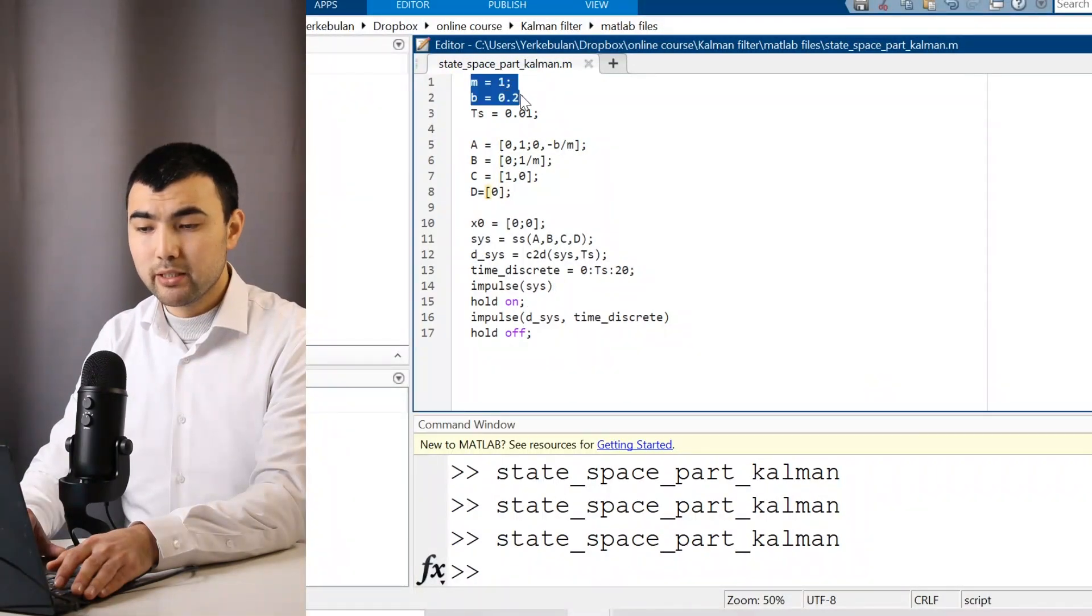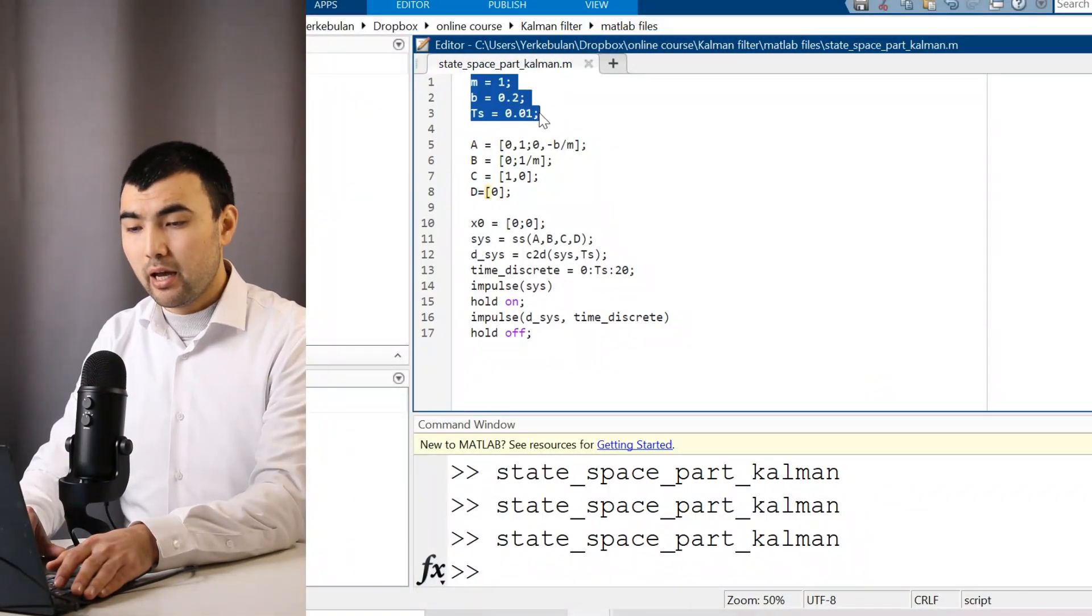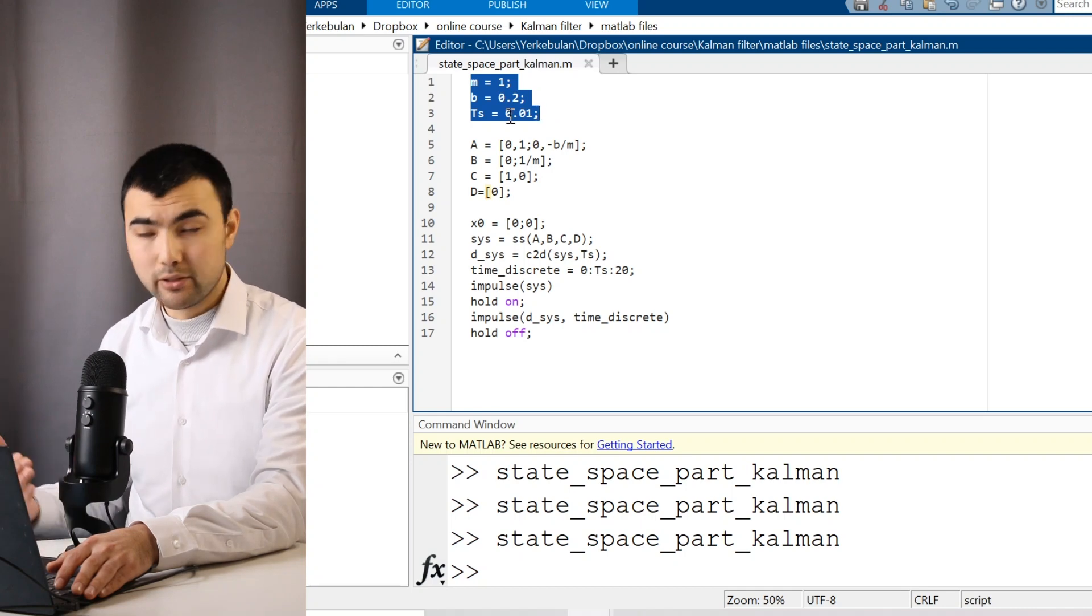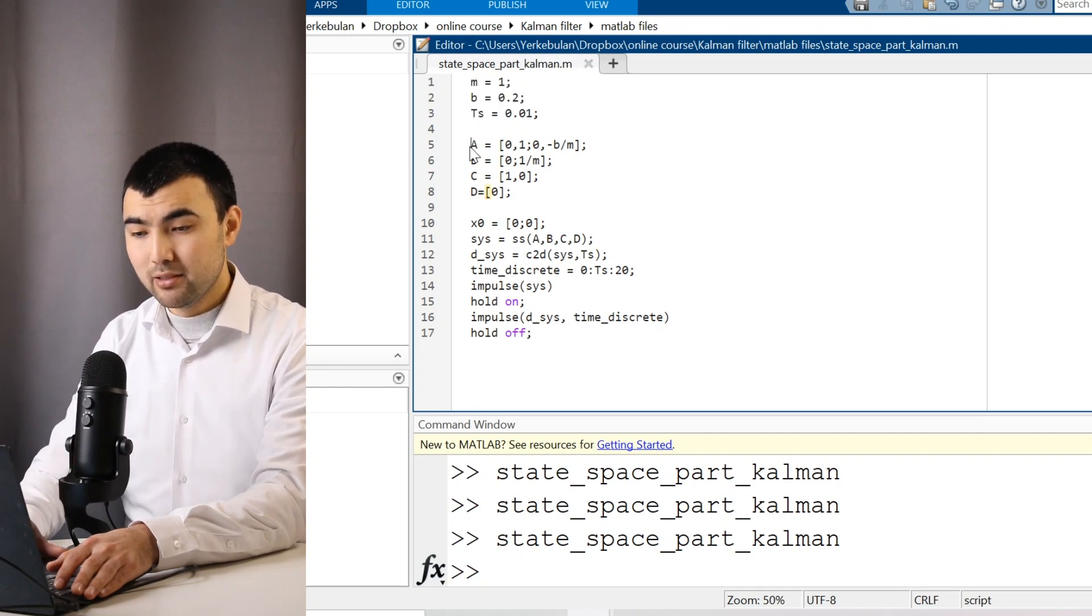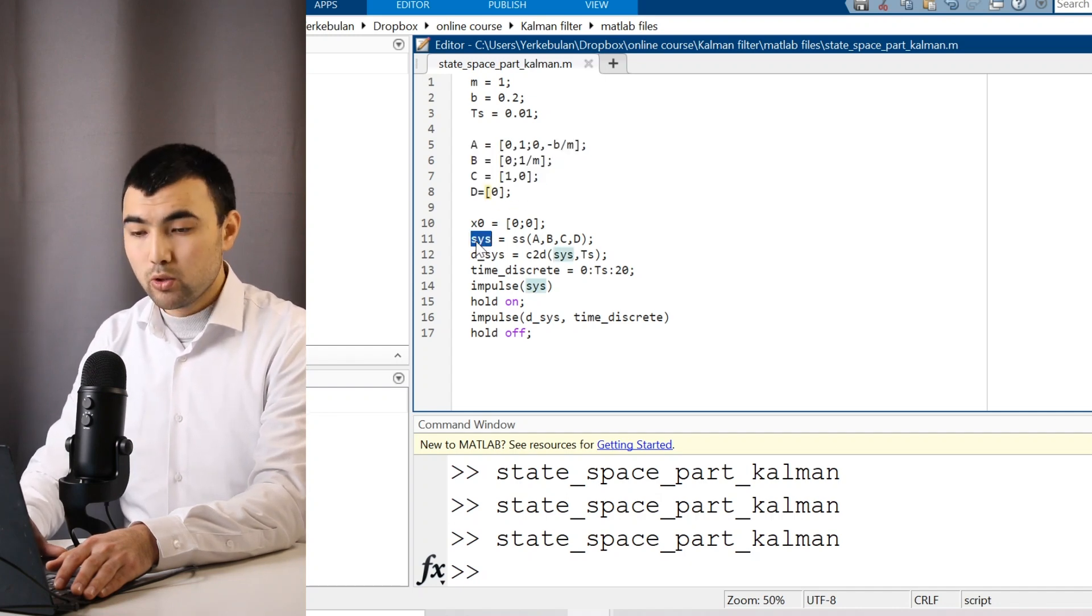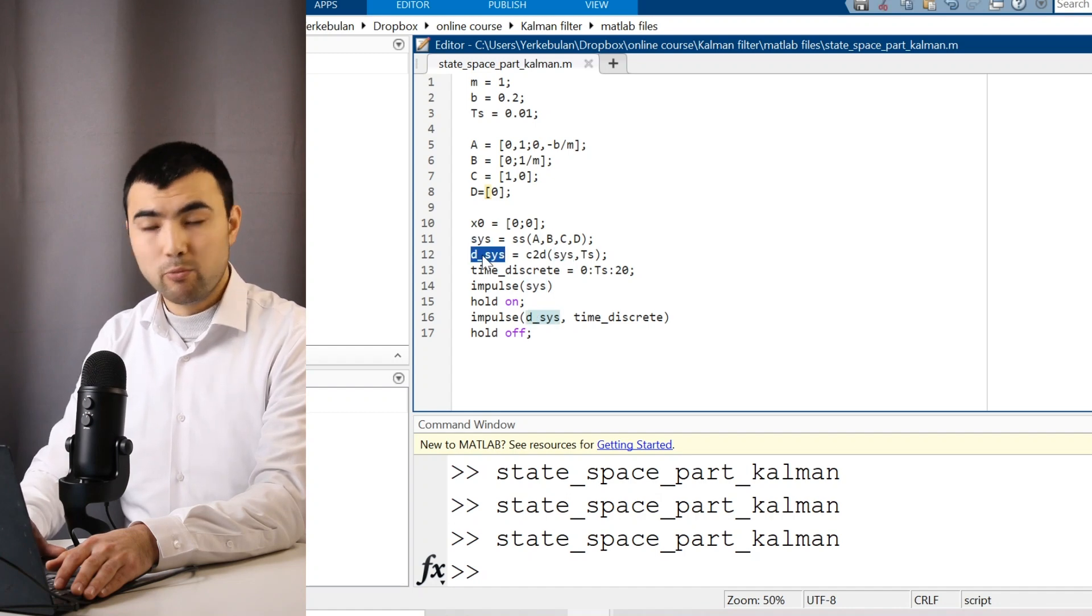So we have the mass of the vehicle, the friction coefficient, and the time period. So our system is going to work at 100 hertz. Then we have the matrices A, B, C, D, and using these matrices, I define the system. Also, we have the digital form of the system, and I computed it using this c2d function.